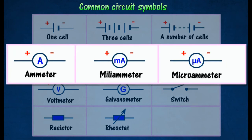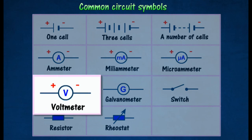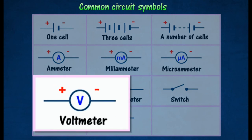An ammeter is a measuring device used to measure the electric current in a circuit. A voltmeter is an instrument used for measuring electrical potential difference between two points in an electric circuit.